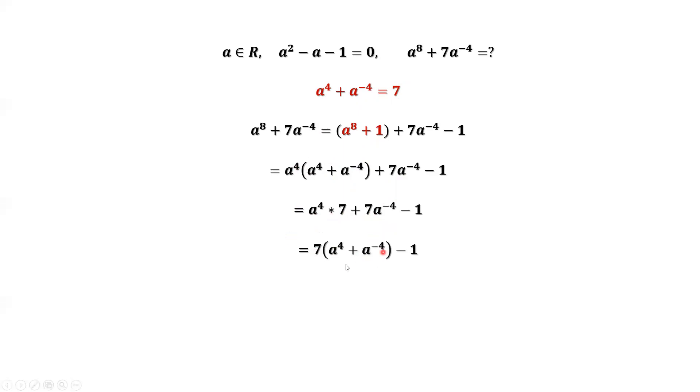The inside part is a to the power of four plus a to the power of negative four. We can use this result again. The inside part is seven. Seven times seven minus one is 48. 48 is the final answer.